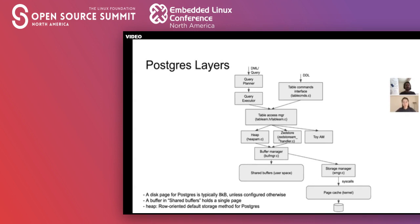The access method API and manager lies just in between. These are some of the implementations. Heap is the default row store for Postgres; ZStore is us. Both heap and ZStore go through the buffer manager, which means we can utilize all the code responsible for Postgres's buffer management — like buffer misses, hits, eviction policies. The buffer manager delegates to the storage manager, pulling stuff out of disk and page cache. If you want to implement your own access method, you can opt not to go through the buffer manager — for example, a toy AM could be an in-memory AM — but we opt to use the buffer manager because it has a lot of benefits for observability.